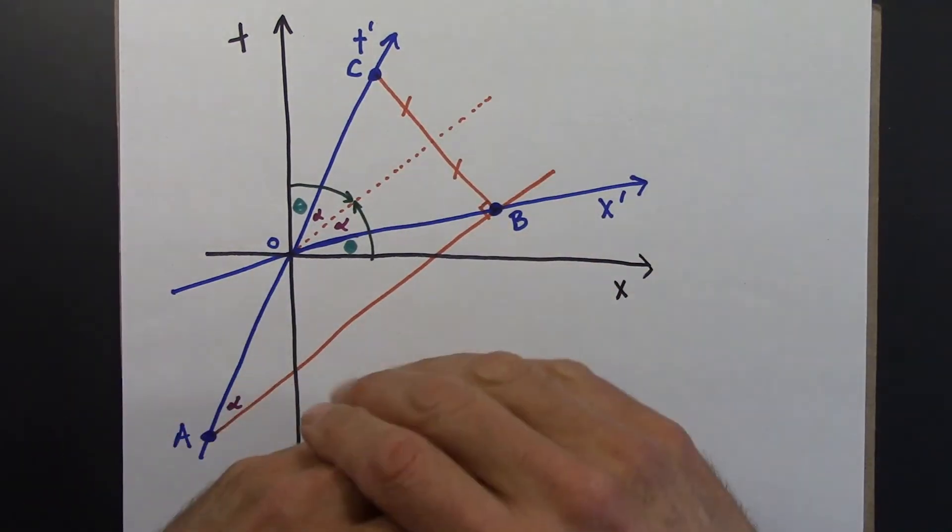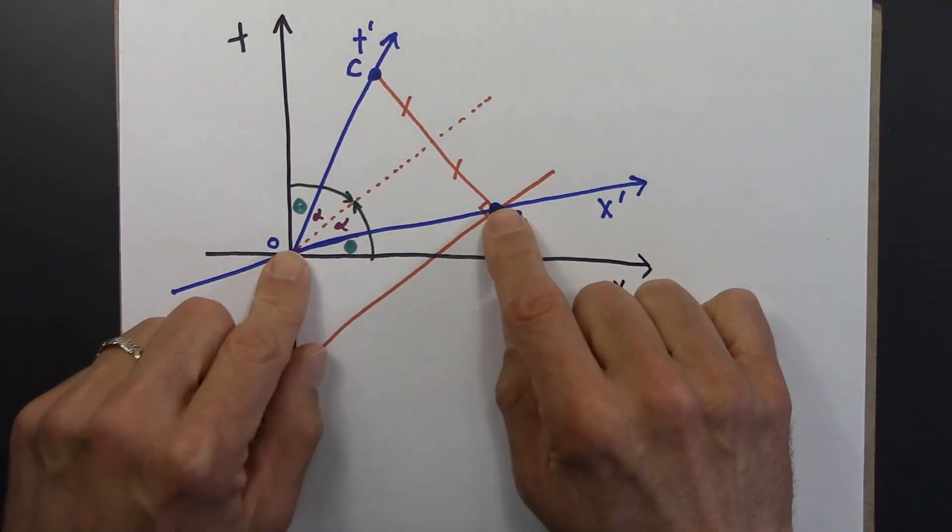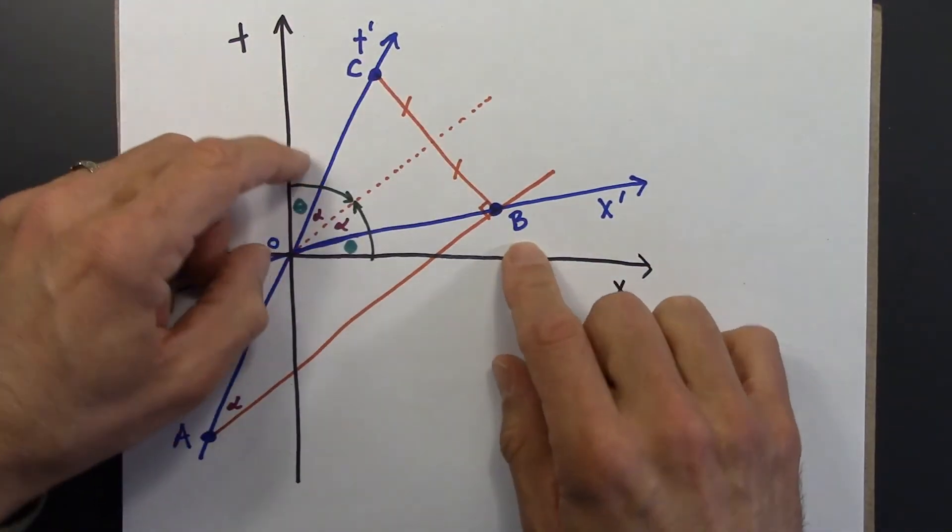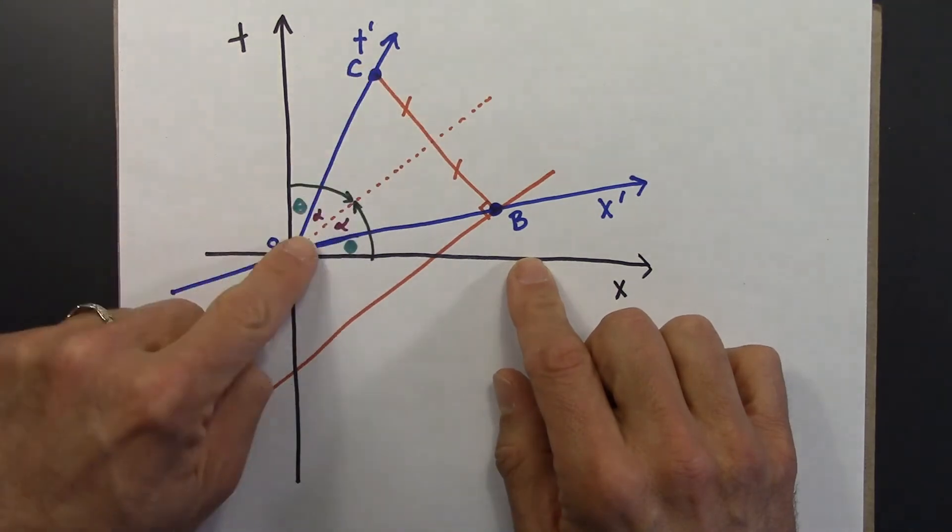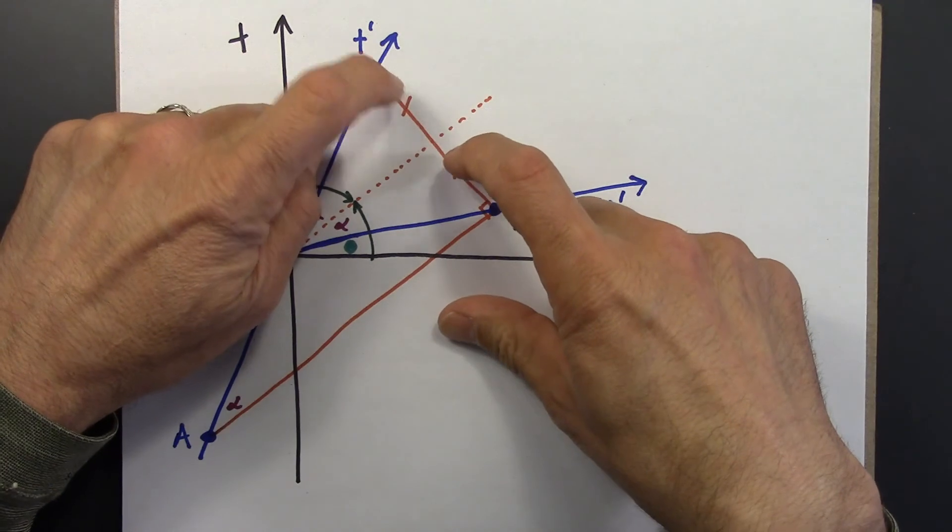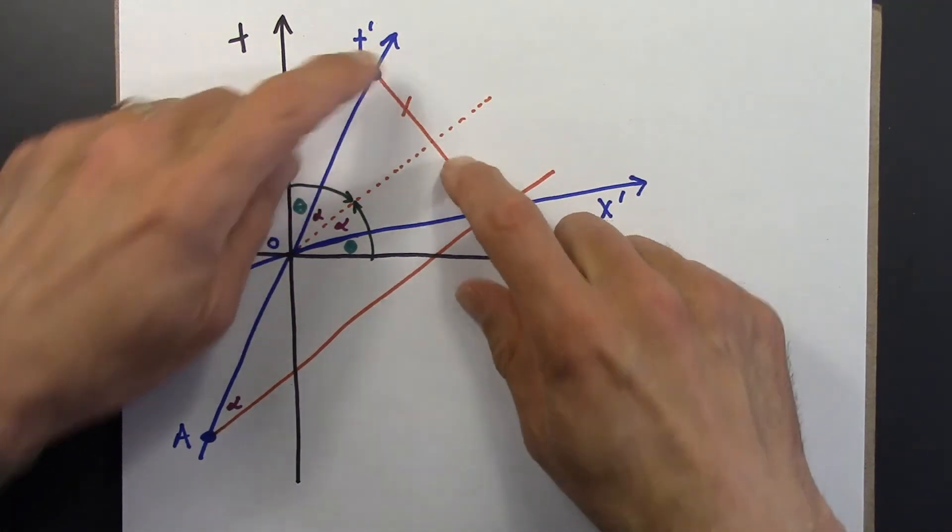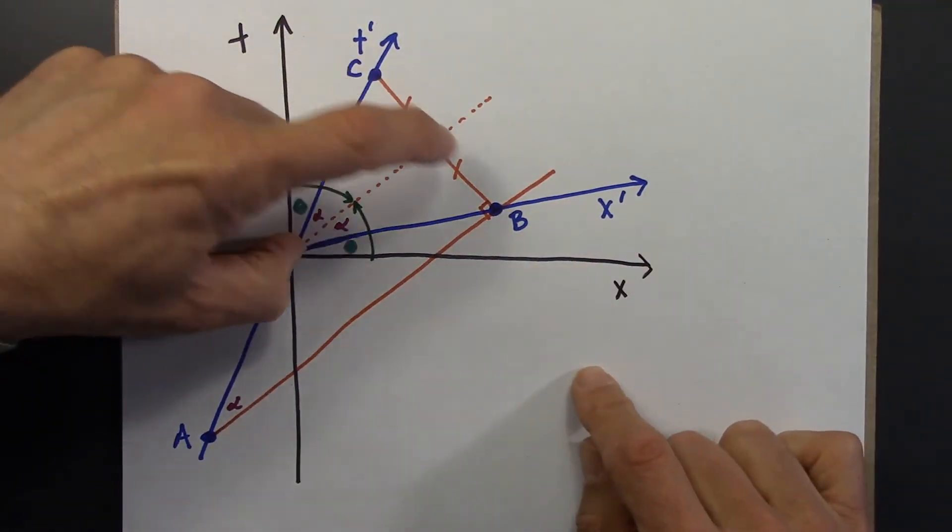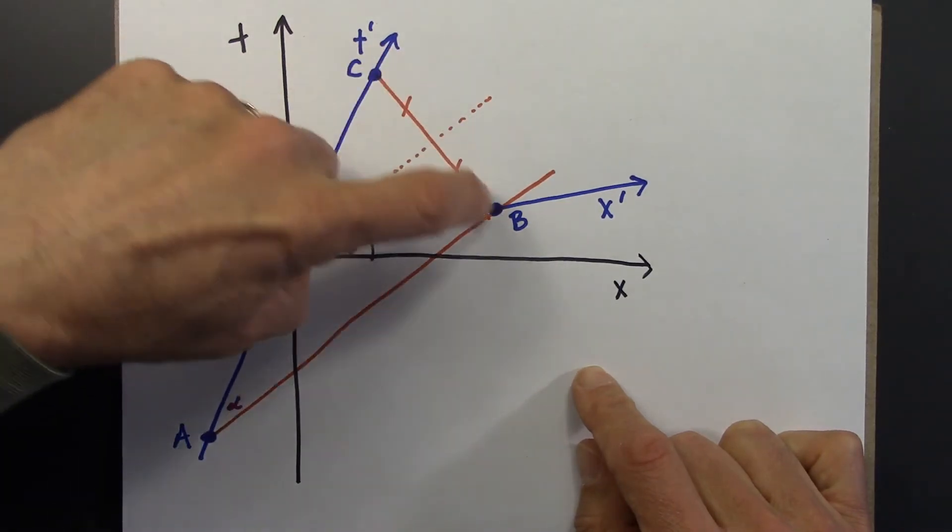Alright, the one other thing I want to conclude from this. Let's look at these triangles again. So this triangle and that triangle. They share an angle. They're sharing a side here.